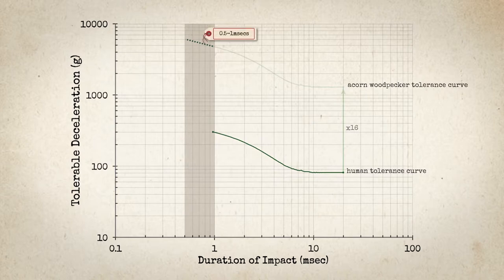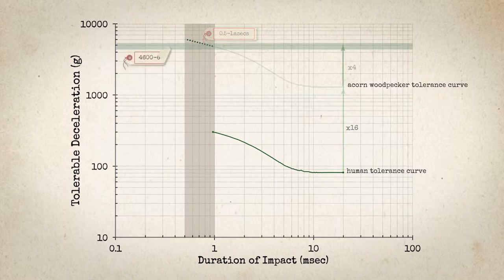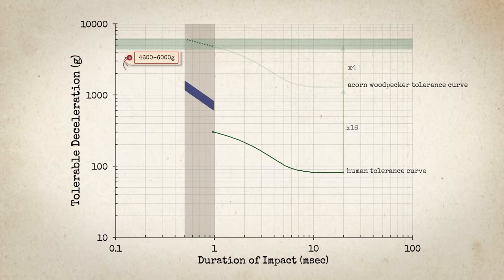You can see that the tolerable deceleration is something like 4,600 G to 6,000 G. And also on this graph we've superimposed the measured decelerations during pecking, and you can see they're substantially below that amount that we're estimating. So this all kind of makes sense that the tolerable acceleration is really much higher than what you would measure during pecking.